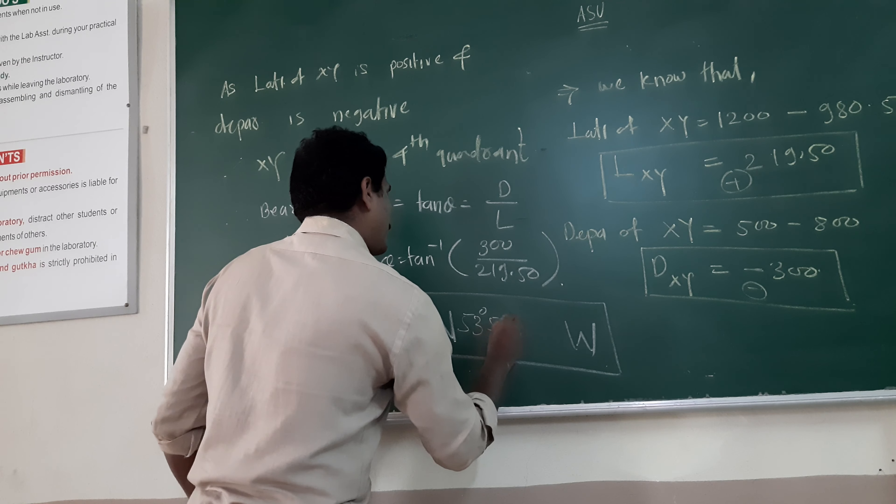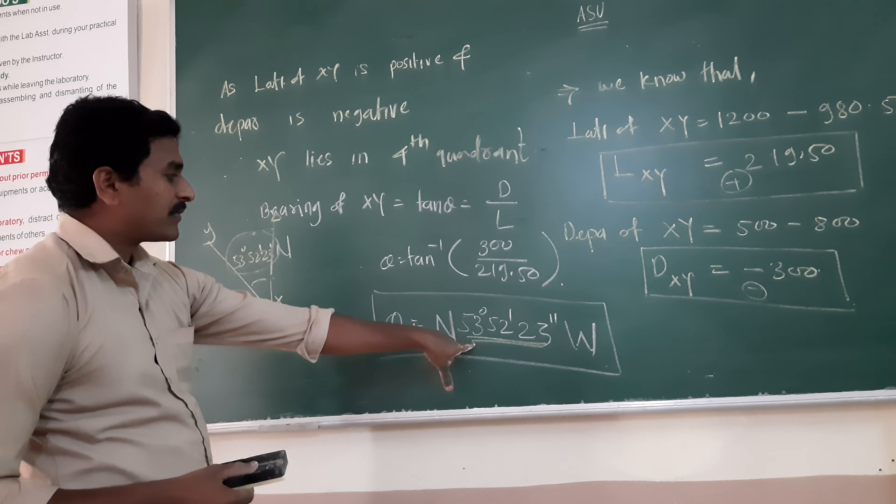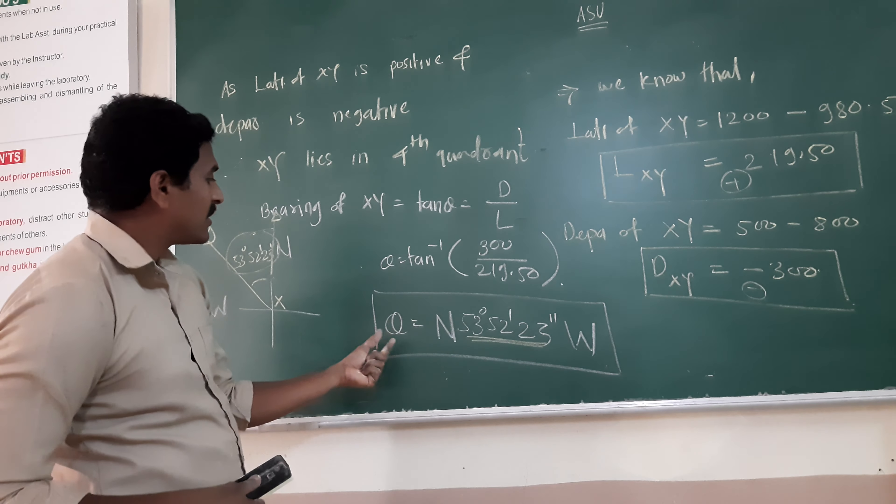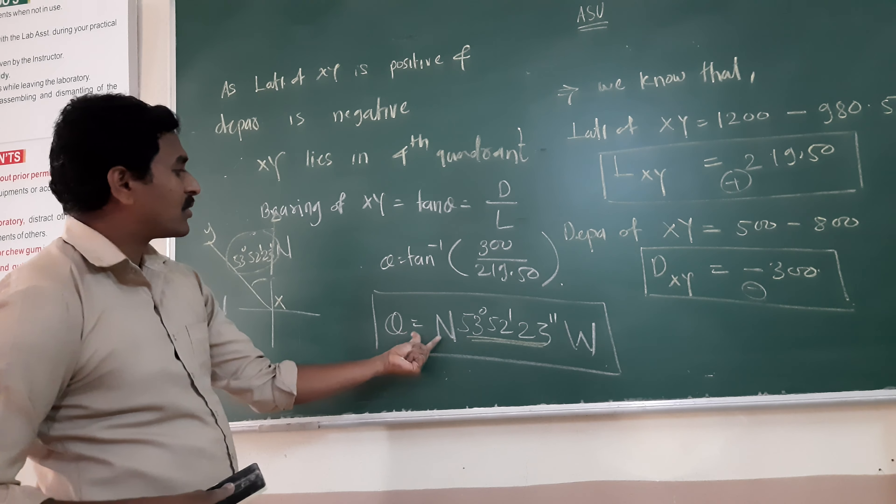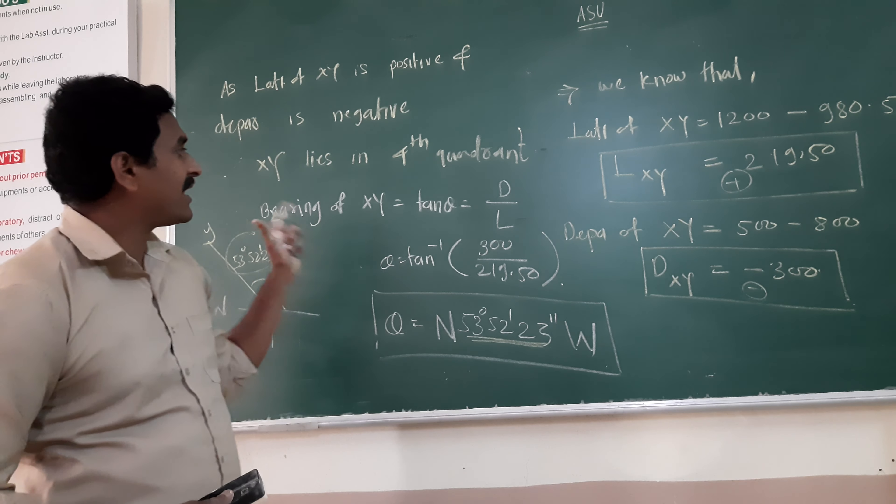So this is the angle. The angle for line XY is 53 degrees 52 minutes and 23 seconds, which is known as a bearing. So that is the bearing of line XY.